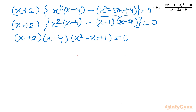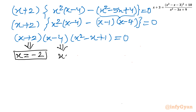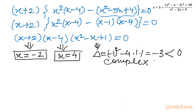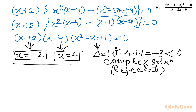Concluding our solutions: from (x + 2) = 0, x = -2; from (x - 4) = 0, x = 4; and when the quadratic x² - x + 1 = 0, we check the discriminant: Δ = (-1)² - 4(1)(1) = 1 - 4 = -3, which is negative — so complex solutions only. We reject this. The only real accepted solutions are x = -2 and x = 4.